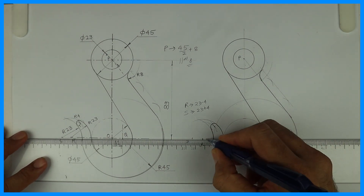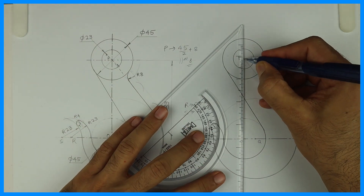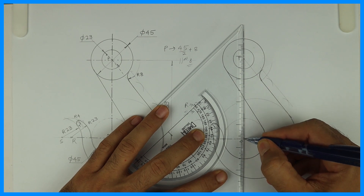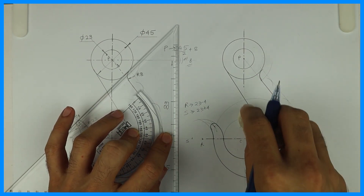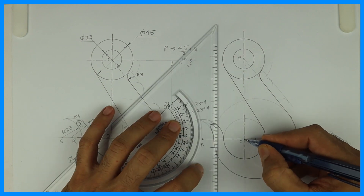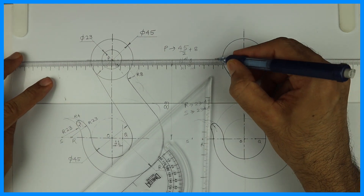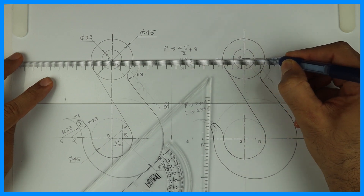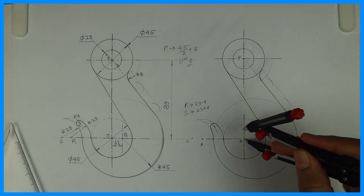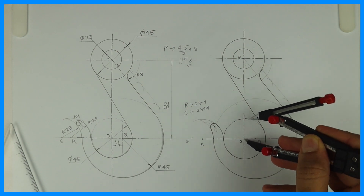And we can draw the axis line. This is dotted, so we can draw it like this.